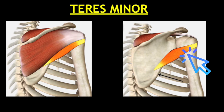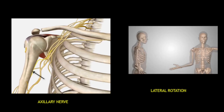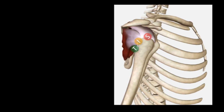Then comes teres minor — a very small muscle inferior to the infraspinatus along the lateral border of the scapula, attached to the greater tuberosity at the inferior facet. Its nerve supply is separate — the axillary nerve — and it helps in lateral rotation. To recap: the greater tuberosity of the humerus has insertion of three muscles — supraspinatus at the superior facet, infraspinatus at the middle facet, and teres minor at the inferior facet.